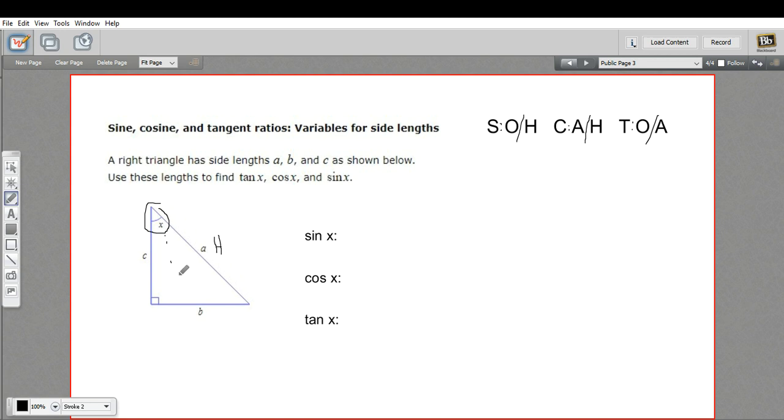The opposite side is always the one that's farthest across. In this case, it's b. Our adjacent is the one that touches angle x but isn't the hypotenuse.